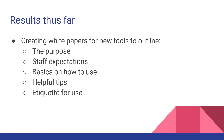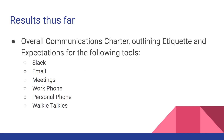As we implement this project, we're creating white papers for all of these tools — outlining the purpose, staff expectations, and basics on how to use each one, along with etiquette for use. Giving your staff as much information upfront helps that transition, especially when you have varying levels of comfort with technology. Overall, we are putting together a communications charter that briefly outlines etiquette and expectations for all the tools we're using: Slack, email, meetings, work phones, personal phones, and walkie talkies.